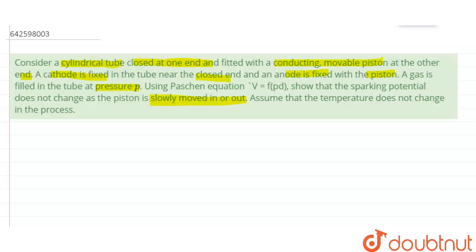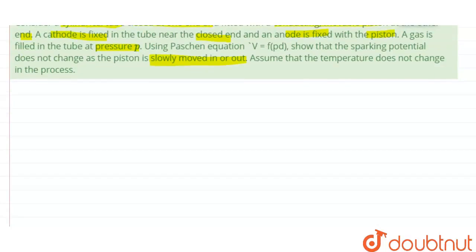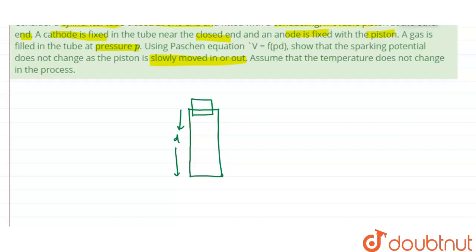According to this situation, the setup is like this: there is a tube — one end of this tube is closed, and at the other end there is a movable piston. The distance of this tube is d, and this tube is filled with gas having volume V and pressure p.